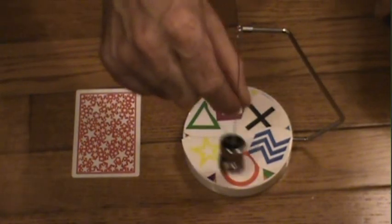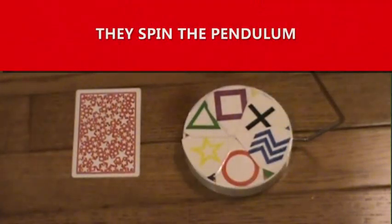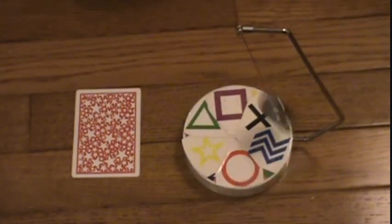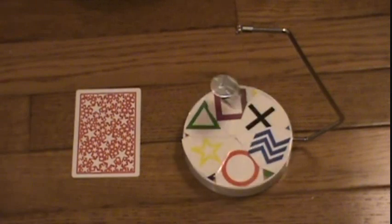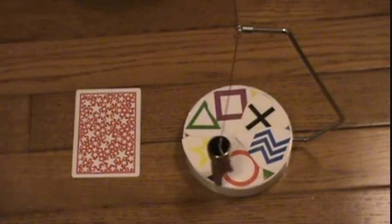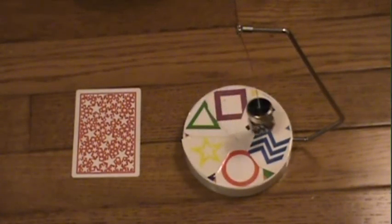A volunteer, you ask them to give this a little spin. So the pendulum swings around all the symbols. Eventually, the pendulum begins to slow down and land, or point, to one of the definitive symbols.